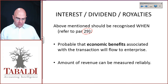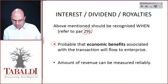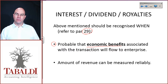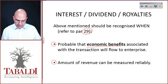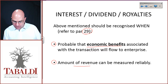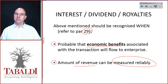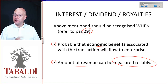There are two recognition criteria. First of all, it must be probable that the future economic benefits associated with this transaction will flow to the enterprise. Second of all, there must be an amount of revenue that can be measured reliably. Those are exactly the same recognition criteria that we found in the framework.